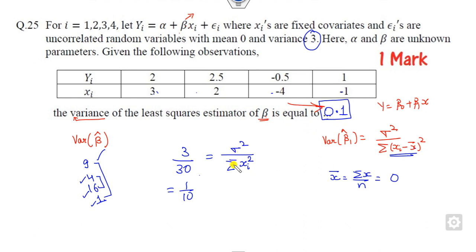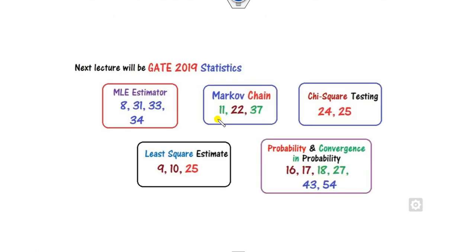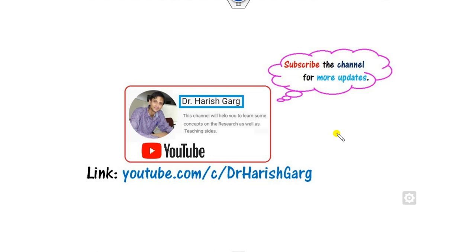So you can see that with the help of these six tips you can easily solve least square estimator questions in a very simple method. I hope you enjoyed this session. In the next class we will see how to solve maximum likelihood estimator questions. Till then, you can follow the provided link to find various videos.